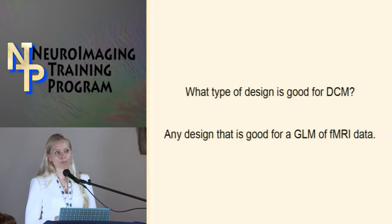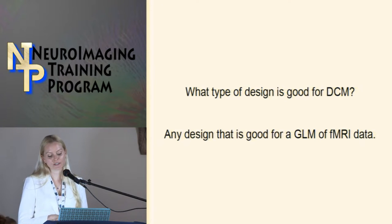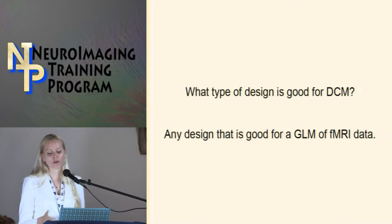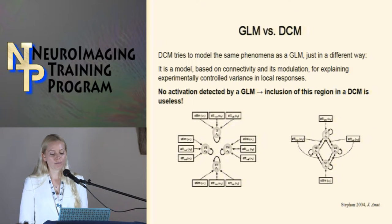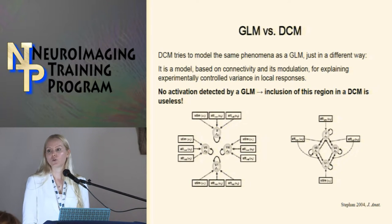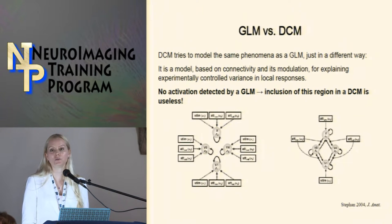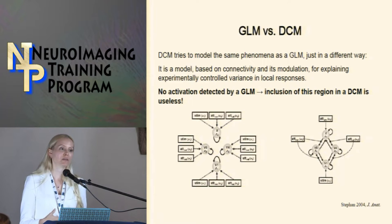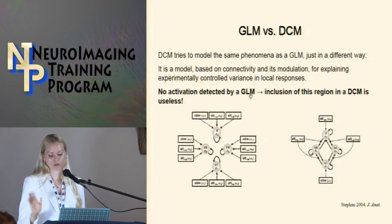What type of experimental design is good for DCM? Any design that is good for GLM of fMRI data — this is an argument for using factorial designs, which tend to be the most powerful. DCM tries to model the same phenomena as a GLM, just differently. It is a model based on connectivity and its modulation for explaining experimentally controlled variance in local responses. Before you do a DCM, you do a GLM, because if a region isn't activated by the task, it doesn't need to be included.